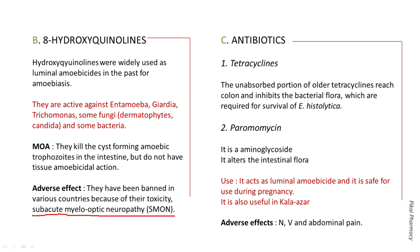The third group under luminal amoebicides is antibiotics. The first antibiotic is tetracycline — its unabsorbed portion reaches the colon and inhibits the bacterial flora required for the survival of Entamoeba histolytica. The second antibiotic is paromomycin, an aminoglycoside that also alters the intestinal flora. Importantly, paromomycin acts as a luminal amoebicide and is safe for use during pregnancy. It can also be useful in cryptosporidiosis.